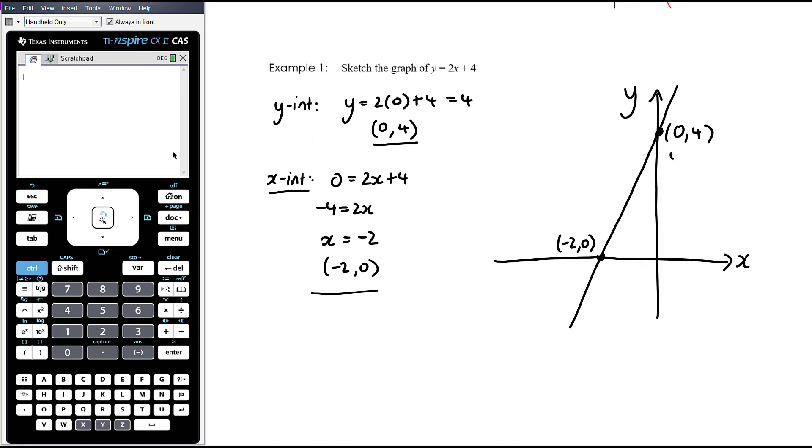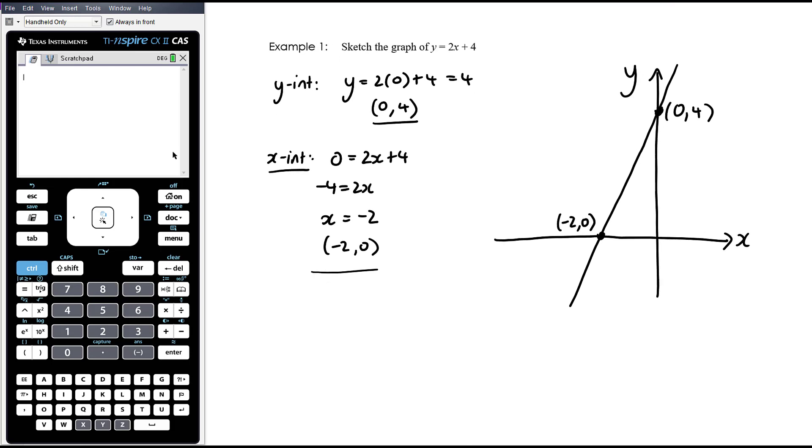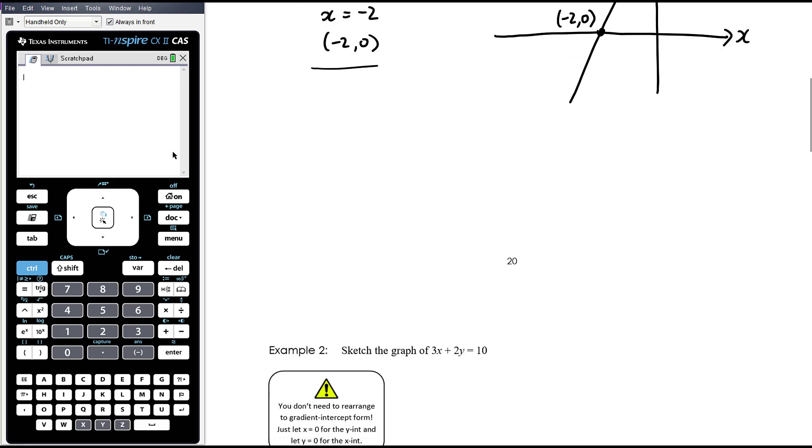When you're asked to label the X and Y intercepts, it doesn't mean writing Y intercept here. A Y intercept is the point where the graph crosses the Y axis. We understand that's what's happening here. You don't label it as the Y intercept. You label it with the coordinates. Where is the Y intercept is what we want to know. Where is it is what we're trying to find out.